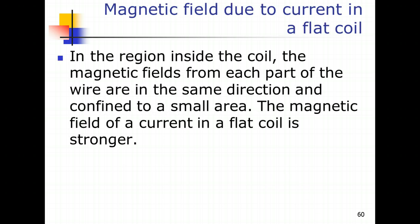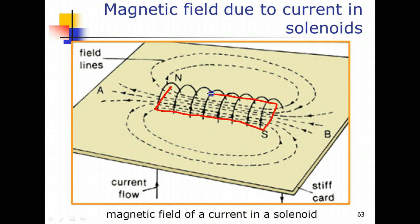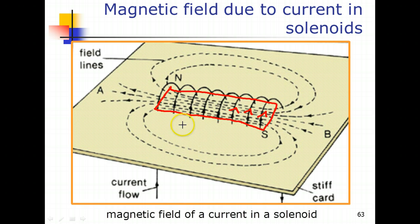If you turn to slide 63, you can see that many turns of wire around the cardboard form your solenoid, with the bottom part hidden below the cardboard. The magnetic field lines created look similar to a bar magnet. Using the right-hand grip rule, if the direction of current flow in the solenoid is in this direction, your thumb will point towards one end — and therefore that end will be the north pole, with the direction of magnetic field lines going from north to south.